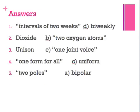Number one, intervals of two weeks — that was bi-weekly. Number two, dioxide is two oxygen atoms. Number three, unison is one joint voice. Number four, one form for all is uniform. Number five, two poles is bipolar.